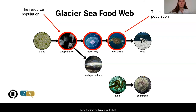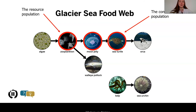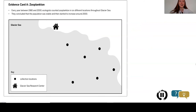Now it's time to think about what might be occurring that caused this to start. I want you to pause the video and find somebody to check in with. What is your prediction about the data that we are about to look at? Many of you had ideas at the beginning about what might be affecting the moon jelly populations. Is your idea still the same? Has it changed? Before we take a look at the evidence, I want you to make a prediction about what we might see in the populations of zooplankton and sea turtles in the glacier sea ecosystem.